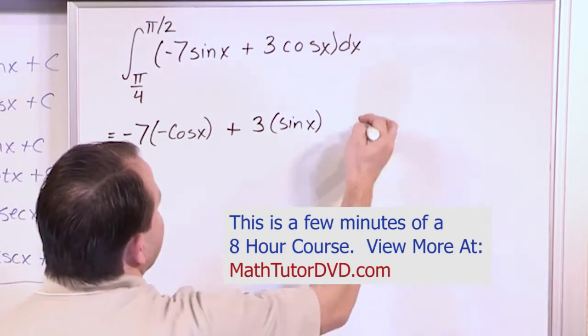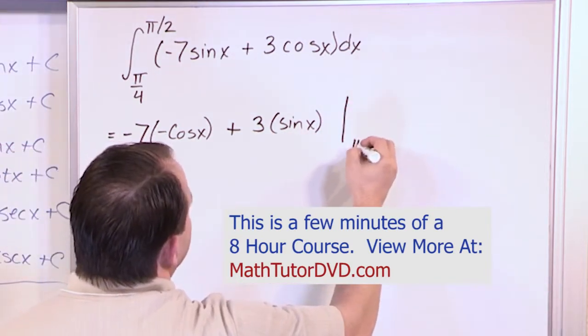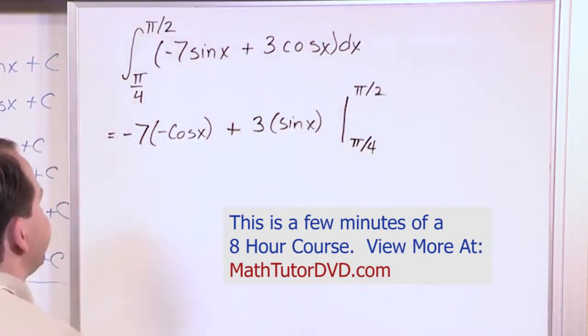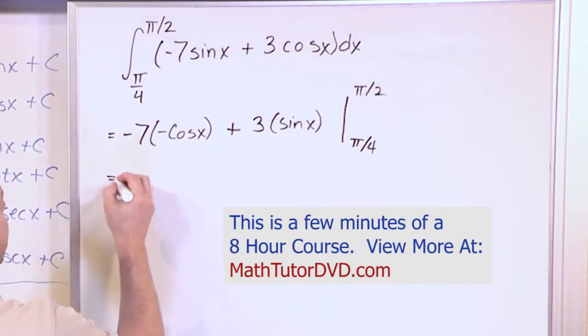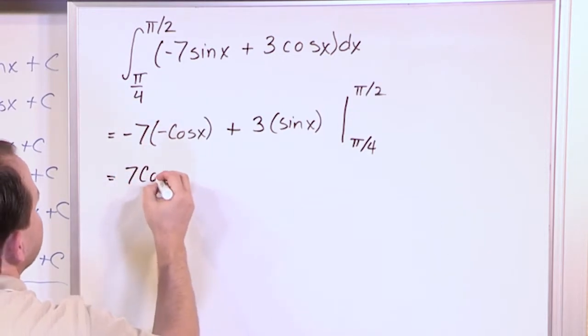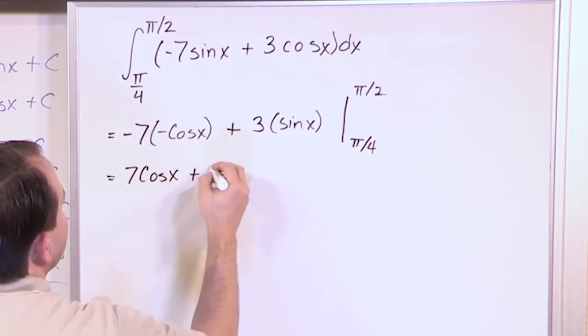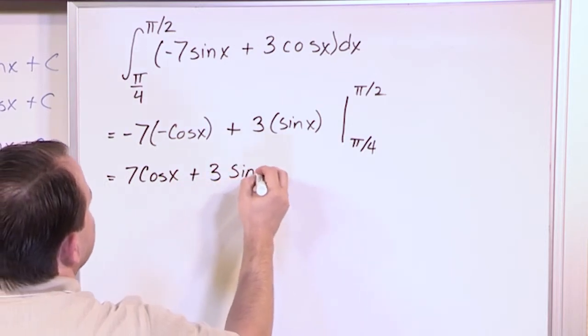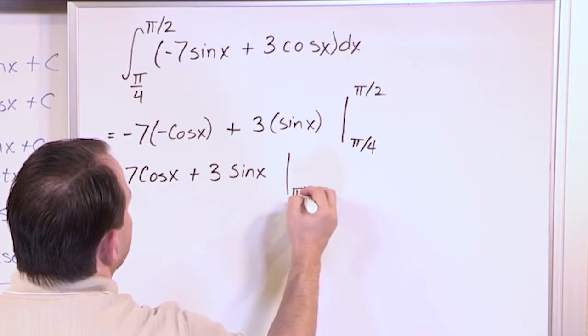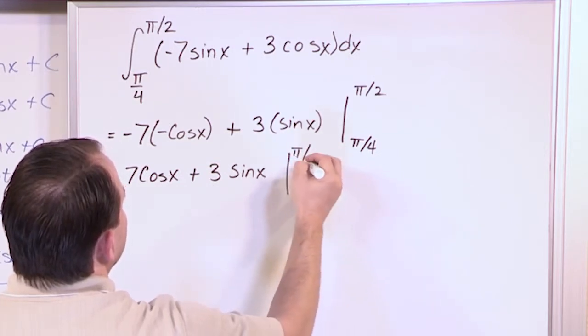Now we don't need a constant of integration because this is a definite integral evaluated from pi over 4 to pi over 2. Now just to make it clear, let's go ahead and just simplify this a little bit. So this is a positive number, 7 cosine of x. We will remove the parentheses just to make it clear. So we have this, now we're evaluating from pi over 4 to pi over 2.